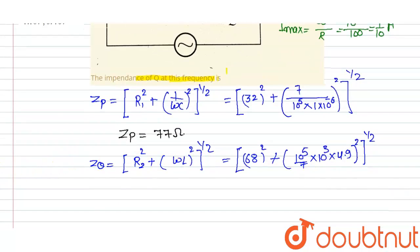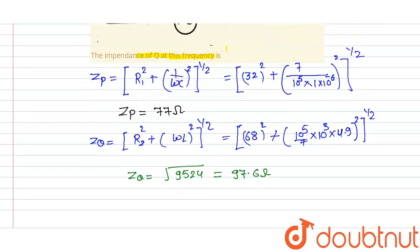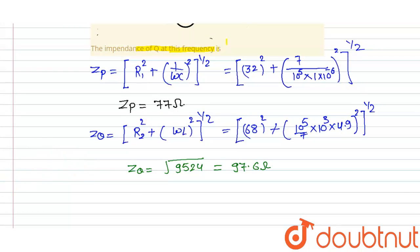When you solve that quantity, we get ZQ is equivalent to root of 9524 that is equivalent to 97.6 ohms. That is the value of impedance of Q.